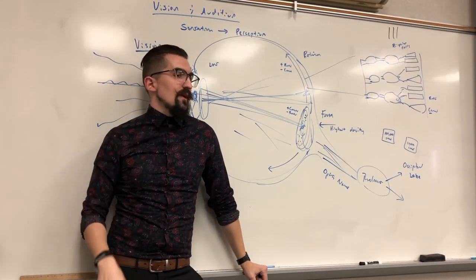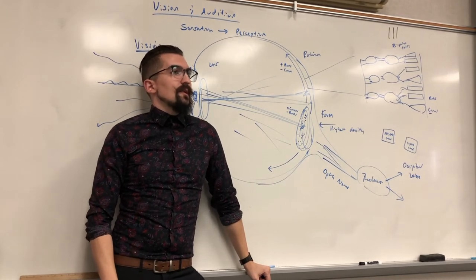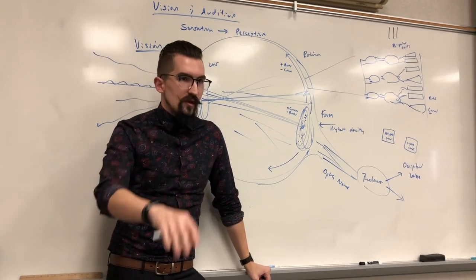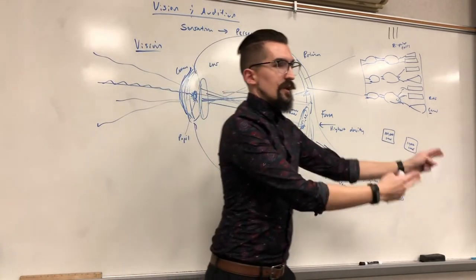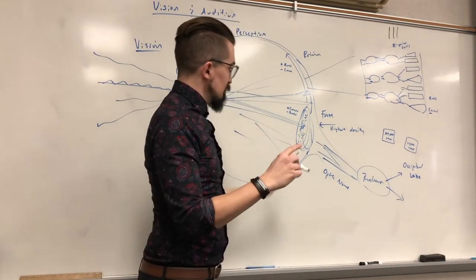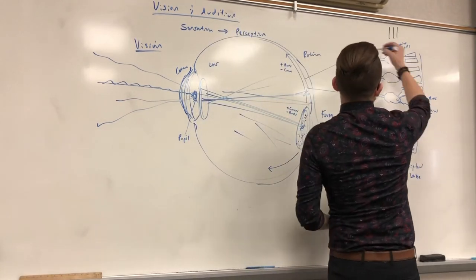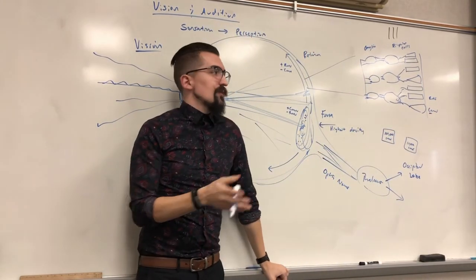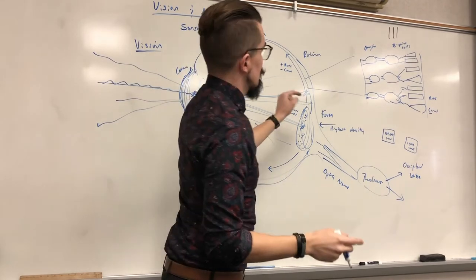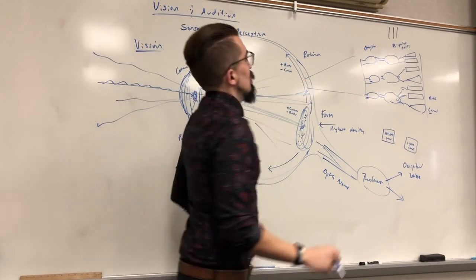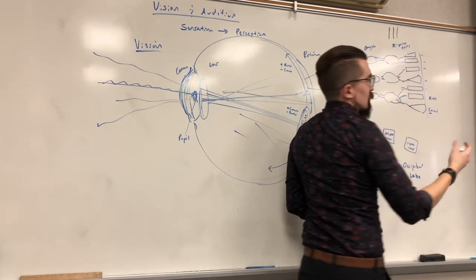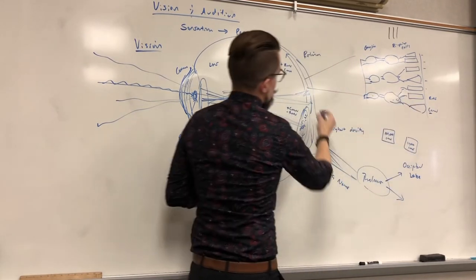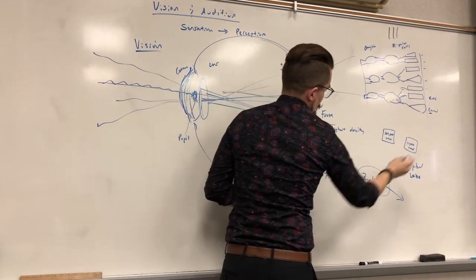The thalamus acts like a traffic director — though that's oversimplifying it — routing sensory signals to the correct lobe for perception. So the pathway is: rods/cones → bipolar cells → ganglion cells → optic nerve → thalamus → occipital lobe.